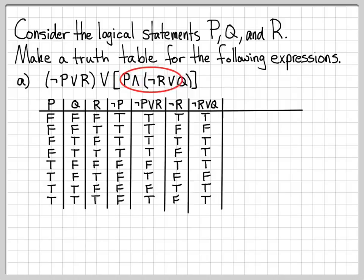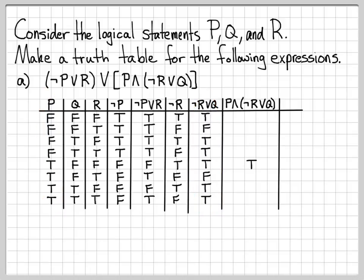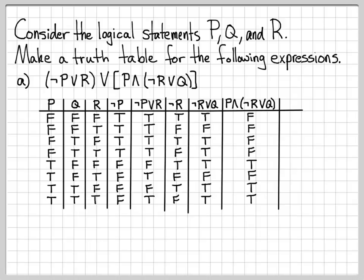Now let's make a column for P and quantity not R or Q. To construct this column, I need to AND the P column with the not R or Q column. When I AND, I'll have a false unless both of them are true. The only rows where both are true are one row in the middle and the last two rows, so those get true entries. Every other row has a false.